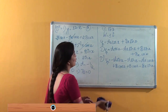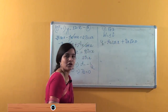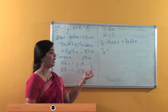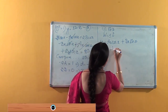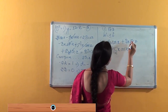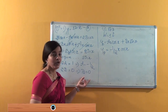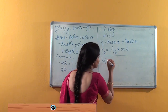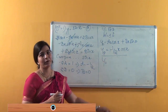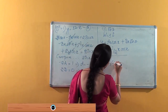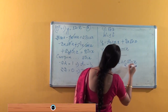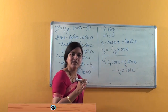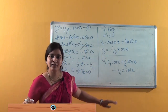Substituting the values A = −½ and B = 0 into the particular solution: yp = −½ x cos x. The general solution is the sum of the complementary and particular solutions: y = c₁ cos x + c₂ sin x − ½ x cos x. In this way we can find the solution using our first method. Thank you.